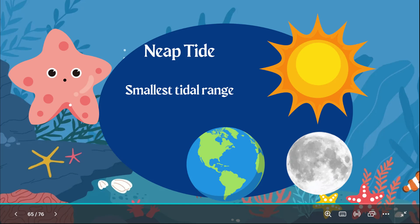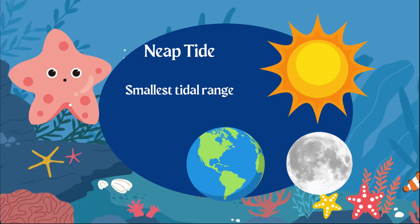Then there are neap tides. Neap tide is the smallest tidal range, occurring when the sun, moon, and earth are at a right angle to each other. So compared to spring tide — which has the greatest tidal range — neap tide gives you the highest low tide and the lowest high tide.